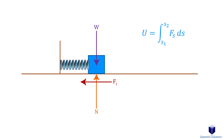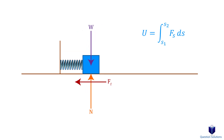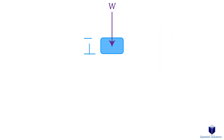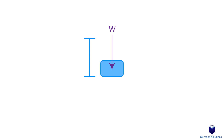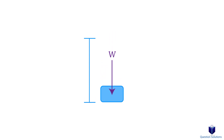Now if our box was initially moving to the left and the spring is slowing it down, then the work done is negative because it's stopping the block. One last thing to consider about work is with weight. If the particle is moving up or down, the work done by weight is simply weight multiplied by the distance the particle traveled in the vertical direction. We say the work done by weight is positive when the particle moves downwards.